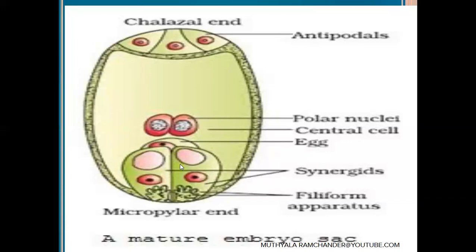On the lateral sides of the egg cell, two synergids are present. The two synergids each contain one haploid nucleus and all cell organelles in the cytoplasm. At the micropylar region of these synergids, filiform apparatus are present. The filiform apparatus have a finger-like structure and mainly help in attracting the pollen tube during fertilization.